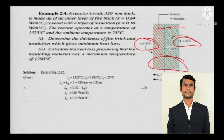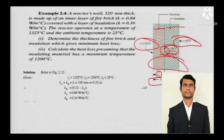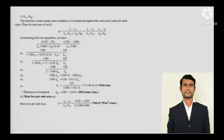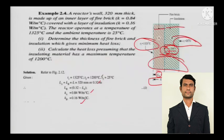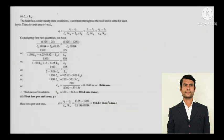The temperatures at each surface and the intermediate temperature between layers are labeled. You need to determine the thickness of the firebrick and insulation which gives minimum heat loss, and calculate the heat loss, presuming that the insulating material has a maximum temperature of 1200 degree Celsius. Since heat is steady, the heat entering from one face will exit with the same magnitude. Q = (T1 minus T3) divided by (LA/KA + LB/KB).